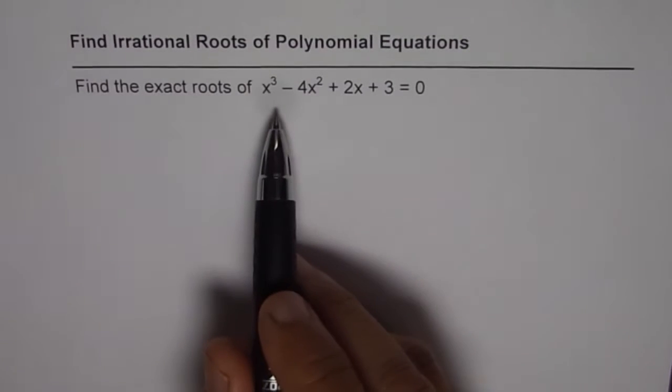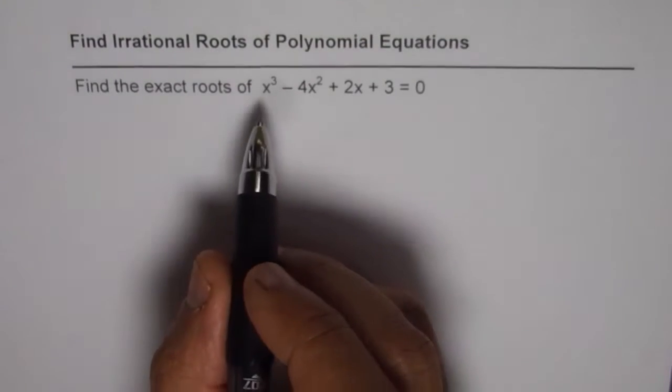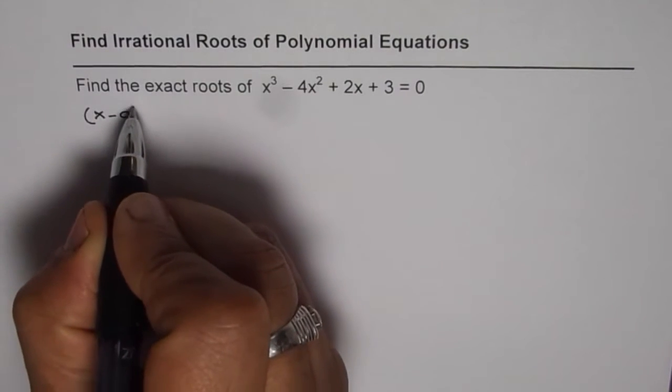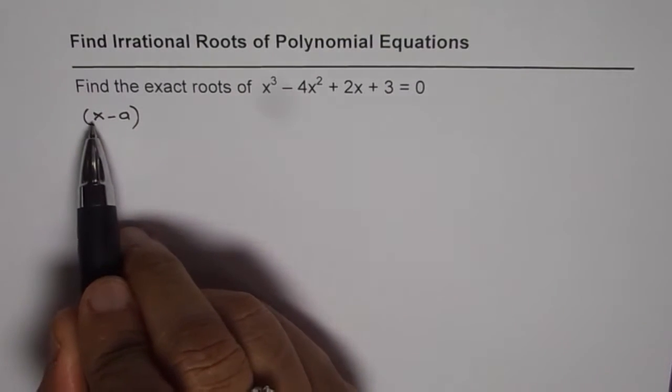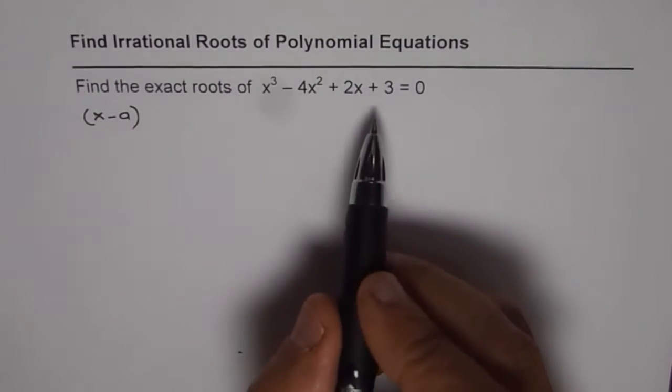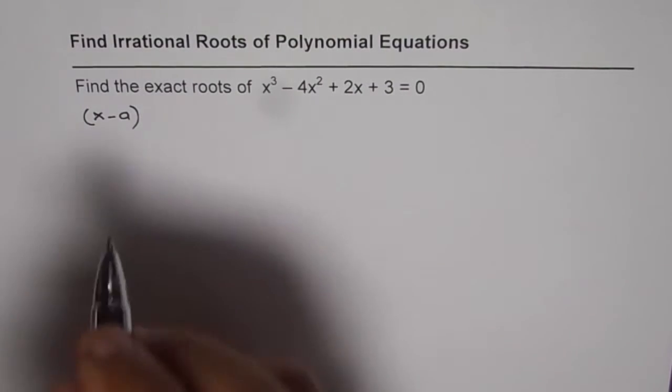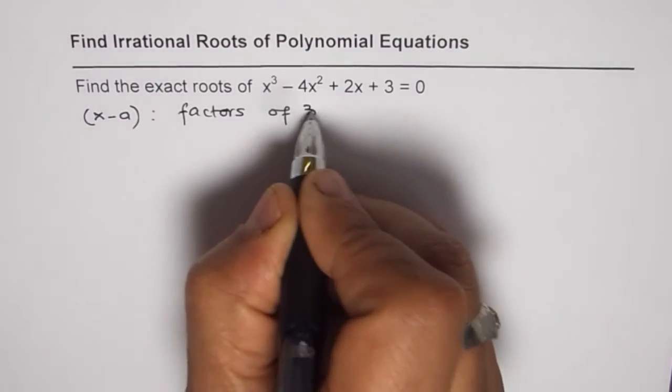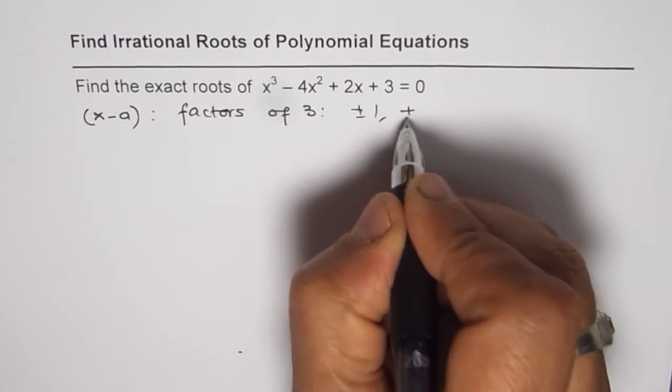When we are trying to find roots of an equation, we are trying to find at least one factor in the form of x - a. Since the coefficient of x³ is 1, we are using a factor as x - a, where a could be a factor of 3. The possible values are factors of 3, which are ±1 or ±3.